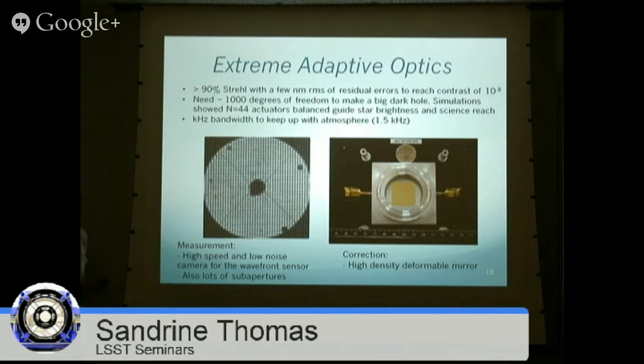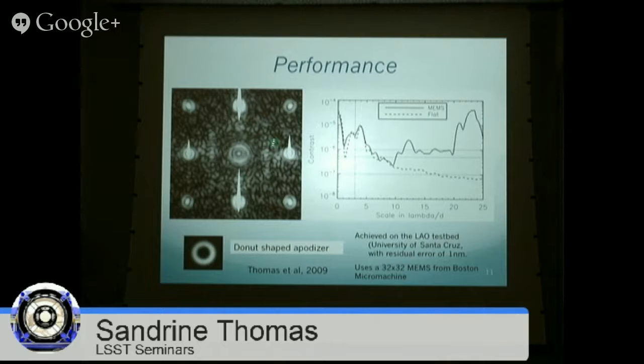This shows lab performance. The star is blocked, and we were achieving roughly a few times 10⁻⁷. Those bright dots you see are due to the DM print-through — the actuator structure diffracts light, which is generally inconvenient, but I'll show later that I'm actually using those dots in my research.